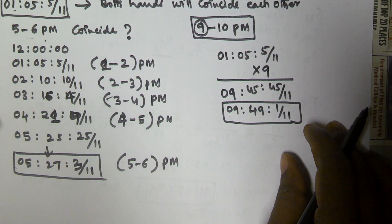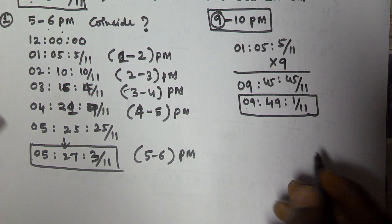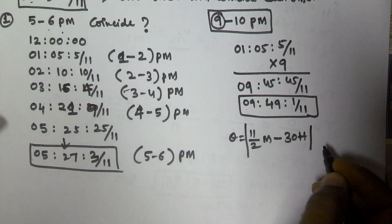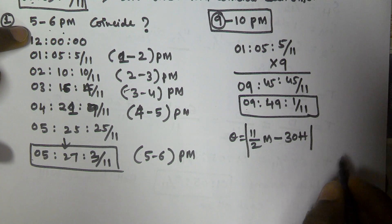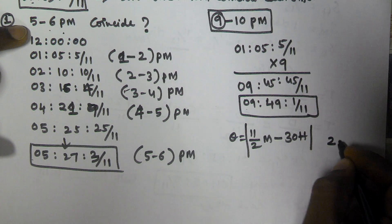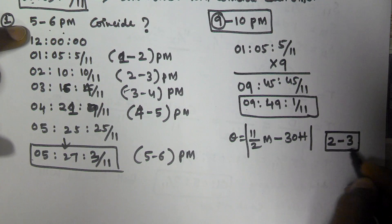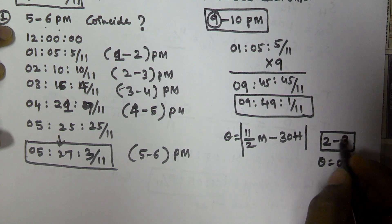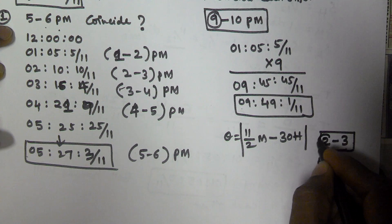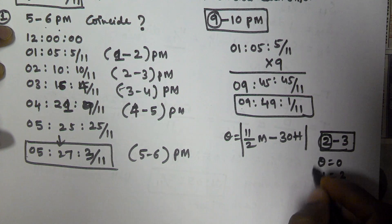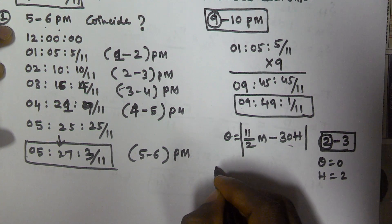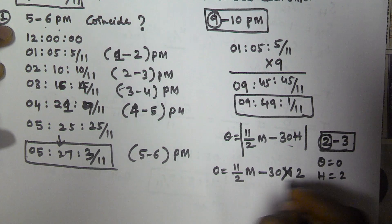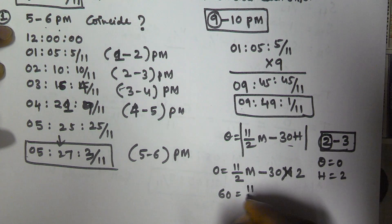Now let's solve using the shortcut formula: θ = (11/2)m − 30h. Let's solve: at what time between 2 to 3 PM will both hands coincide? When both hands coincide, θ = 0, and since we are between 2 to 3 PM, h = 2. Substituting: 0 = (11/2)m − 30 × 2, which gives 60 = (11/2)m.